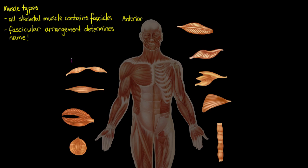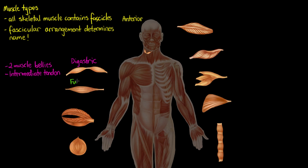The first type we're going to look at is a digastric muscle. A digastric muscle will have two muscle bellies — the belly being the body of the muscle itself — with a continuous intermediate tendon in between both of those bodies. A convenient example is the digastric muscle itself, located below the jaw, extending from the anterior base of the mandible to the mastoid process and connecting in the middle via that central tendon to the hyoid bone.